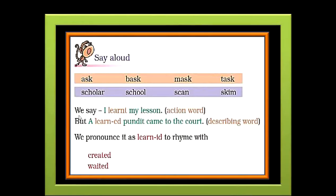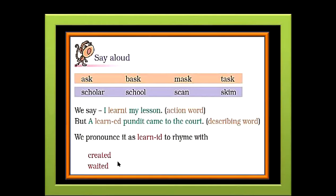Well done children. We say, I learnt my lesson. In this sentence, the word learnt is the action word, so we can call it a verb. Now in the second sentence, a learned pundit came to the court. The word learned is a describing word. It describes the noun pundit. And we learn that a word that describes a noun is called an adjective. So here the word learned is an adjective. We pronounce it as learned to rhyme with created, waited.